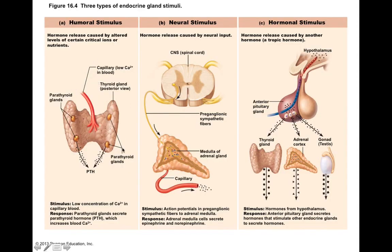There are a couple of different mechanisms by which endocrine glands can become activated: humoral stimuli, neural stimuli, and hormonal stimuli. Humoral stimuli are when concentrations of a given substance in your bloodstream trigger an endocrine gland to release a particular hormone. For example, blood calcium concentration can trigger the release of parathyroid hormone by the parathyroid glands, which sit on the posterior part of your thyroid gland. If your blood calcium levels get too low, your parathyroid glands can release parathyroid hormone, which ultimately acts to increase blood calcium.